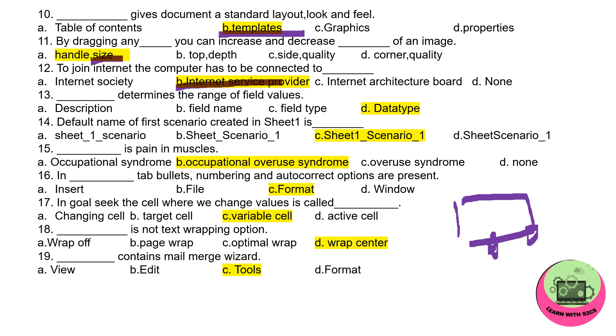13th one: dash determines the range of field values, so it will be data type. 14th: default name of first scenario. Sometime you make some cases, so that is termed as scenario. Its default name is Sheet1_Scenario_1. Remember, that is very important.